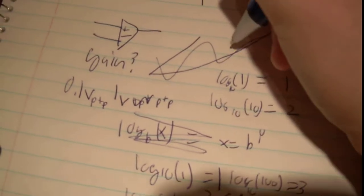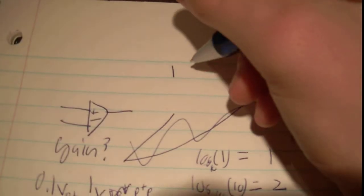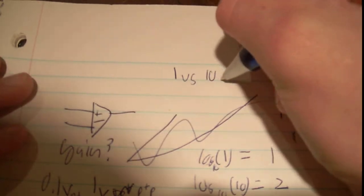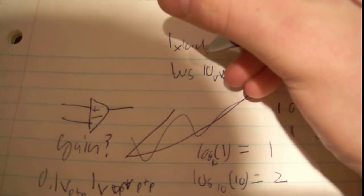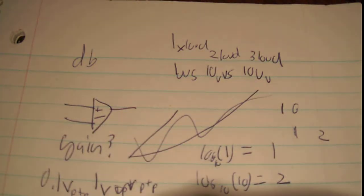So, if you have a 1 volt signal versus 10 versus 100 volts, then you're going to see this is going to be 1 times loud. This is going to be 2 times loud. This is going to be 3 times loud. Now, if you're wondering, decibels, the way we measure sound in decibels, decibels are logarithmic. Decibels are logarithmic.